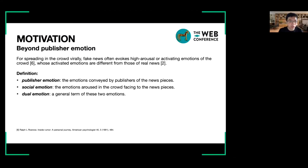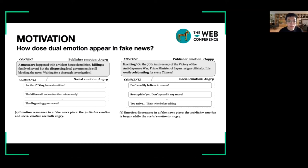For the news piece, dual emotion has two appearances. When the publisher emotion is the same or similar to the social emotion, there are emotion resonances. On the contrary, when the publisher emotion is different from the social emotion, there are emotion dissonances.